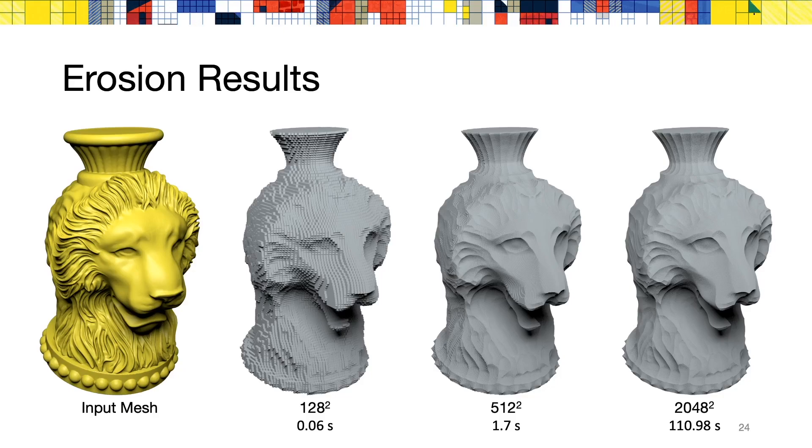In this slide, you can see the result of an erosion operation with different grid sizes. Note that an erosion can be viewed as the result of a dilation that is performed on the complementary of the input shape, which is something that is very easy to do in our setting. And while the timings do increase with the resolution, it is important to note that they stay proportional to the number of pixels in the 2D array that support our data structure.